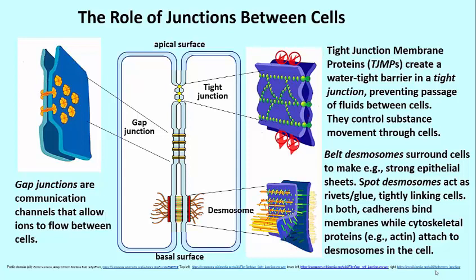The spot desmosomes are rivets that link cells together tightly. The tight junction, made with those TJMPs, forms a watertight barrier that can control how substances can move. They can either get into the cell and traverse a sheet of cells from one side to the other, or they can't get across the sheet — that's what the tight junction is all about.